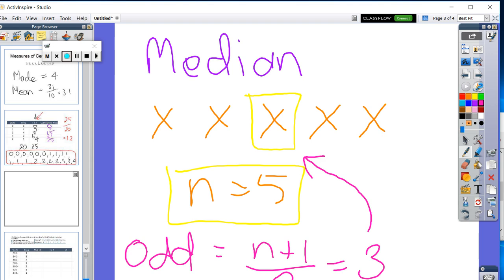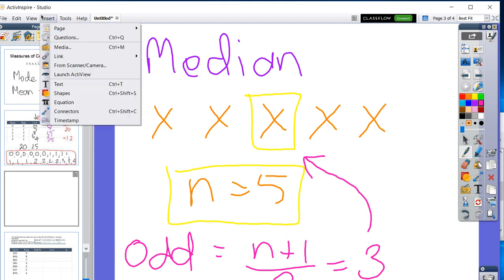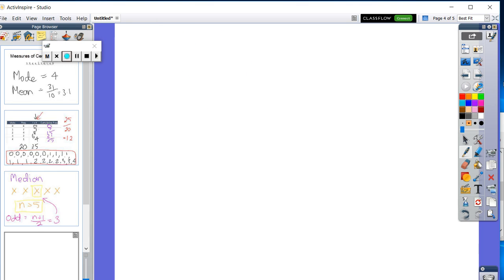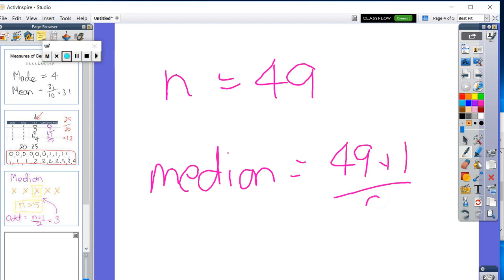It doesn't mean that the median is three, it just says that that's the position. So, if we had 49, let's say, let's say N was equal to 49, there are 49 numbers. How would we find out the position of the middle one? Well, the median would be 49 plus one divided by two, which means the 25th position. And then you'd need to go and look up what the actual 25th position is.